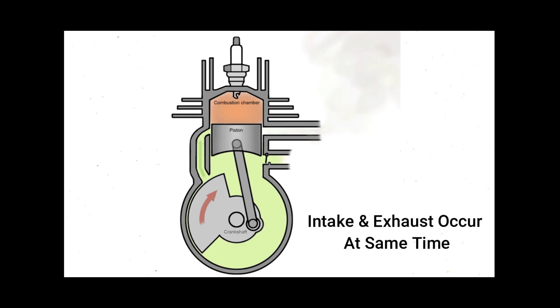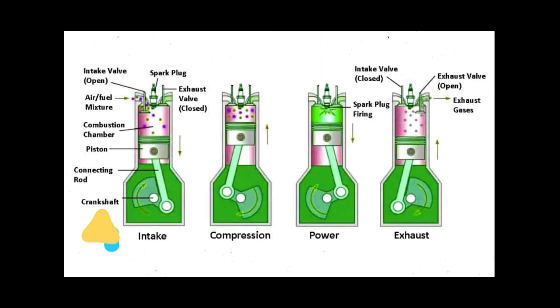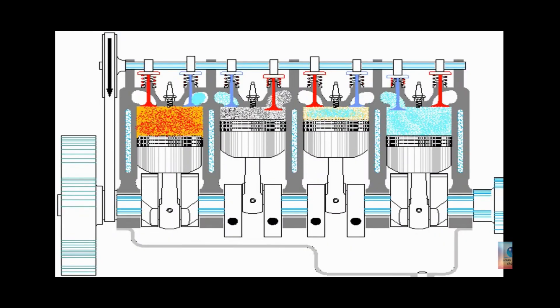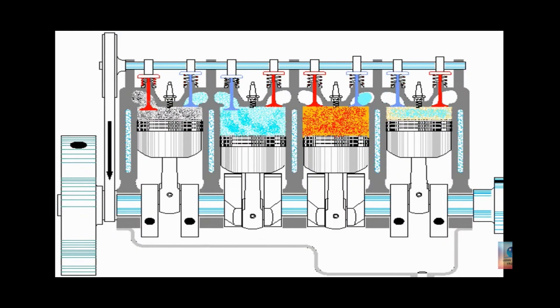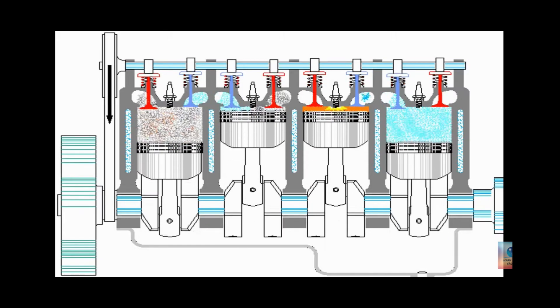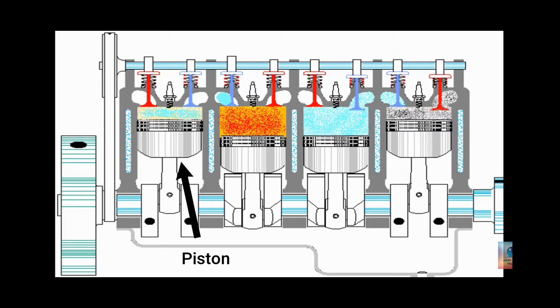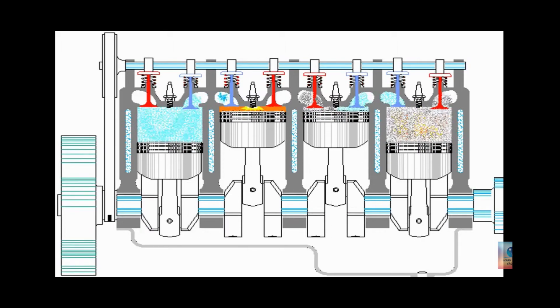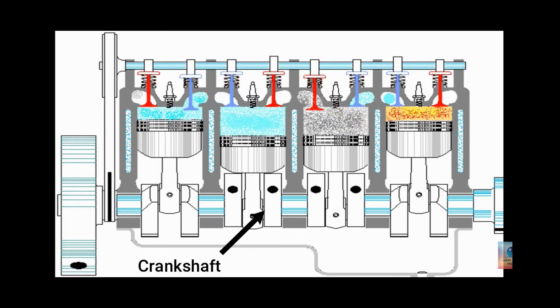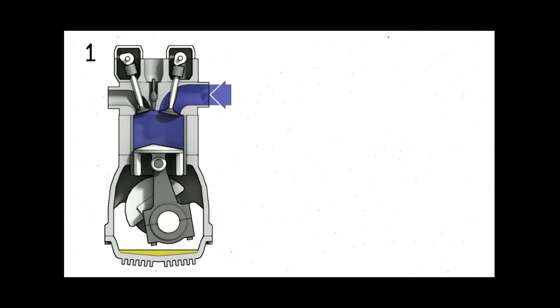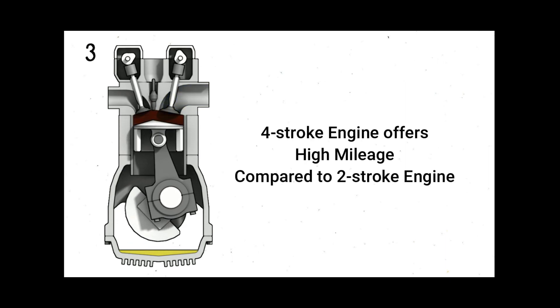A four-stroke engine is an internal combustion engine variant in which the piston completes four strokes while turning a crankshaft. The piston moves two times up and down inside the cylinder and completes two crankshaft revolutions. This type of engine offers high mileage compared to two-stroke engines.